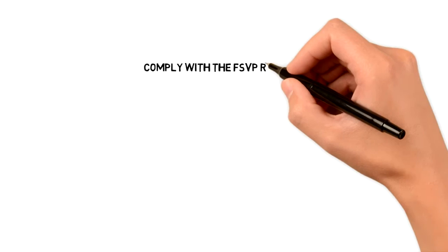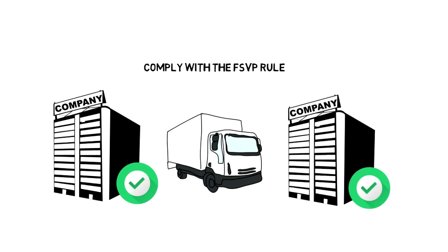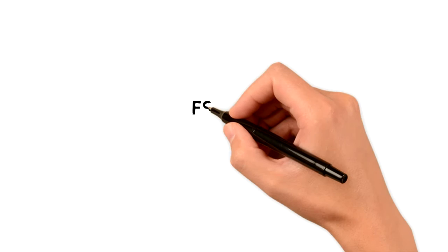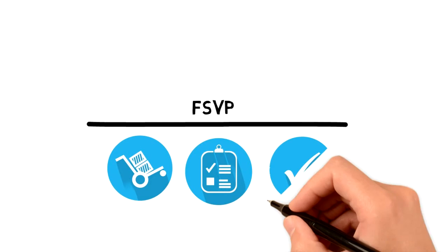And then companies that are required to comply with the FSVP rule that I mentioned will need to ensure that they have a verification program in place for all of the foods that they import unless they're exempt. And I should mention that for that rule, the importer, as defined in the rule, is technically the entity that's responsible for compliance. So an FSVP will include approving suppliers, conducting hazard analysis for the imported foods, and verification activities, among other requirements.